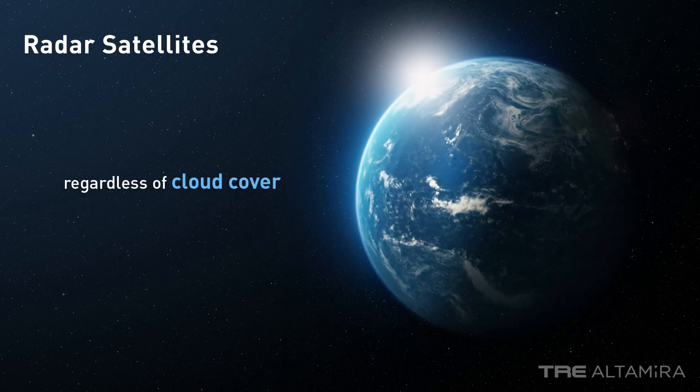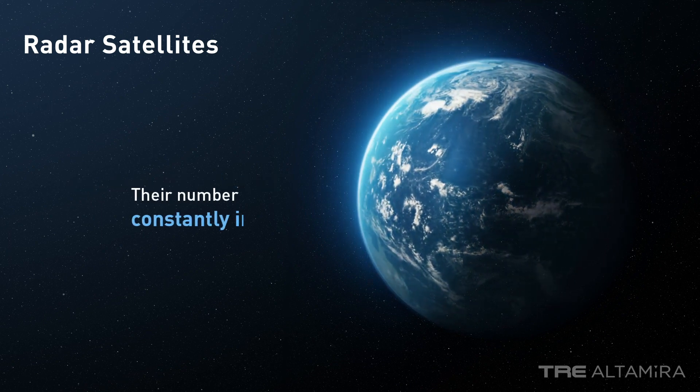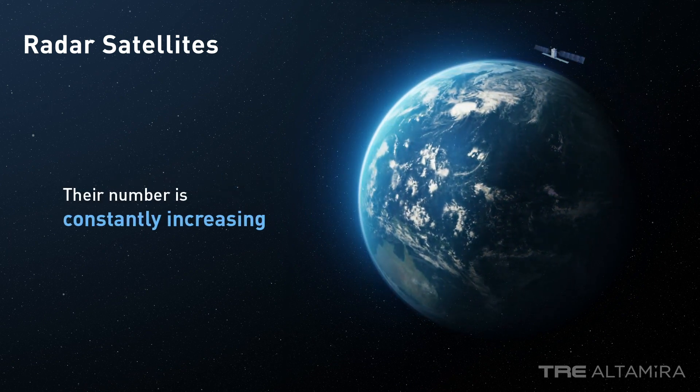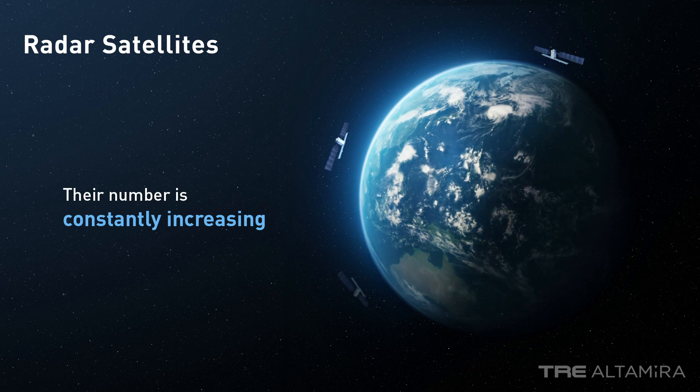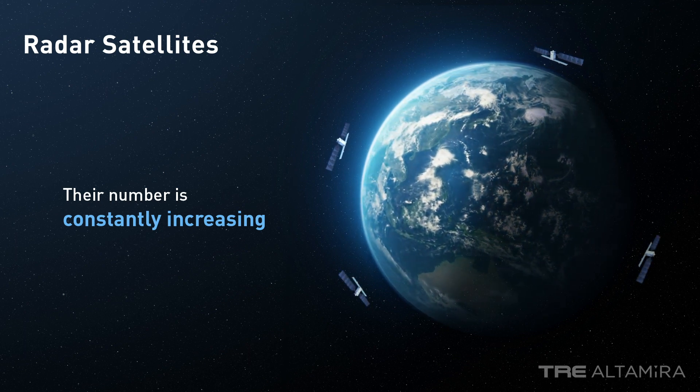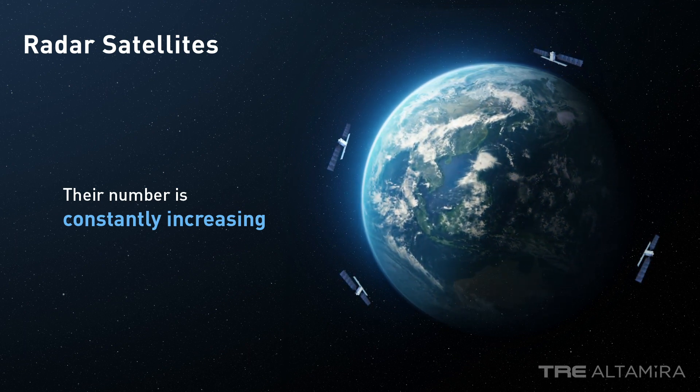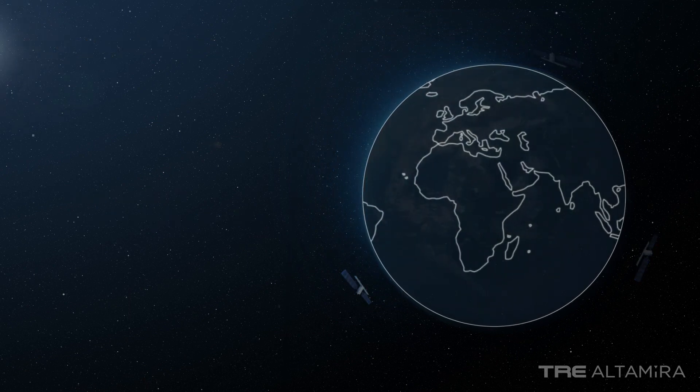The number of radar satellites has drastically grown since the first ERS constellation was launched. Today, there are multiple radar satellites that continuously acquire images of our planet, and several new missions are planned for the future.